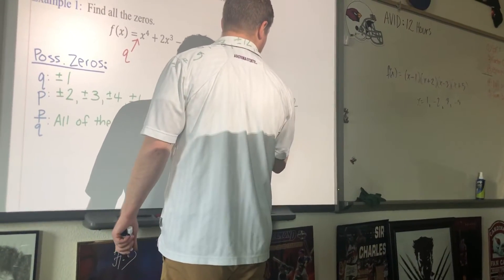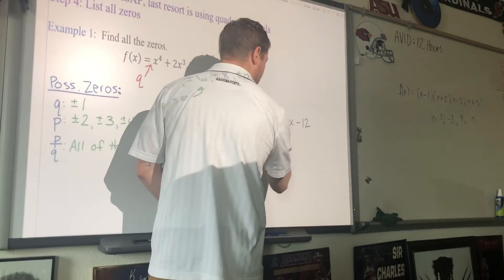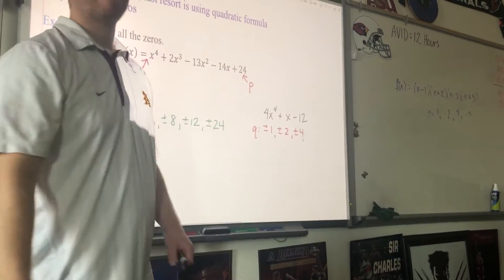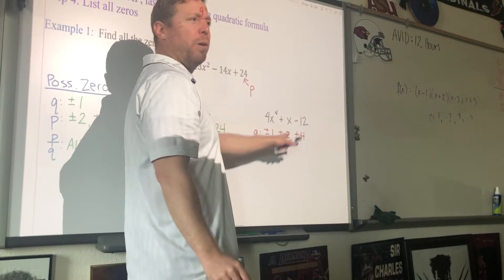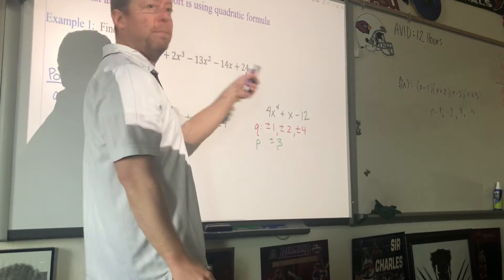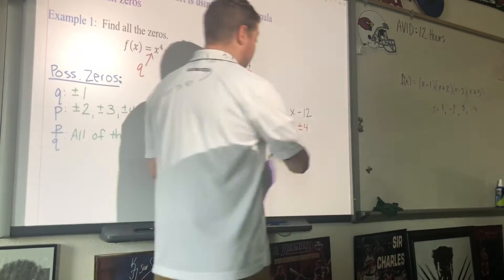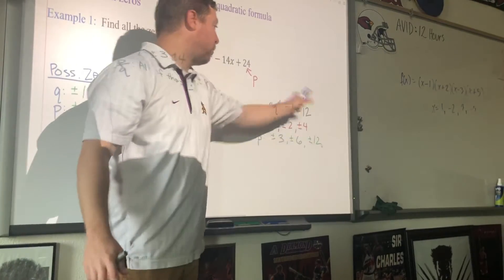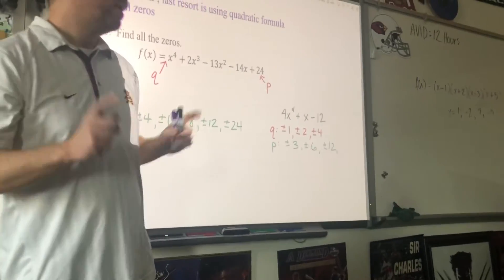1, 2, 4. Everybody agree with that? Okay, let's do factors of P. 1 I already wrote. 2 I already wrote. 3. 2 times 6 is 12. And 12, right? Because 1 and 12. So remember, I just didn't... Like, 2 is a factor of both. 4 is a factor of both. But I'm not writing them twice. I'm only writing them out each time. Now, P over Q gets crazy.